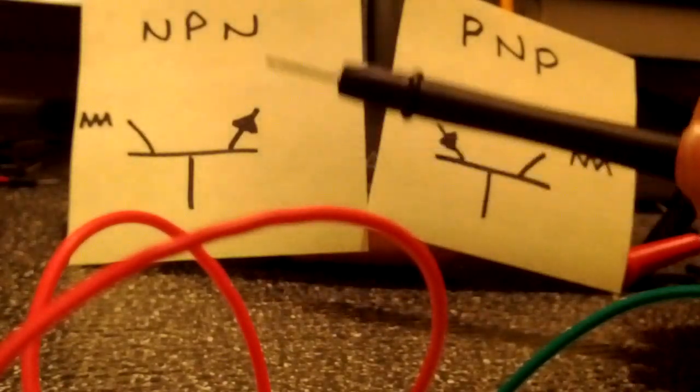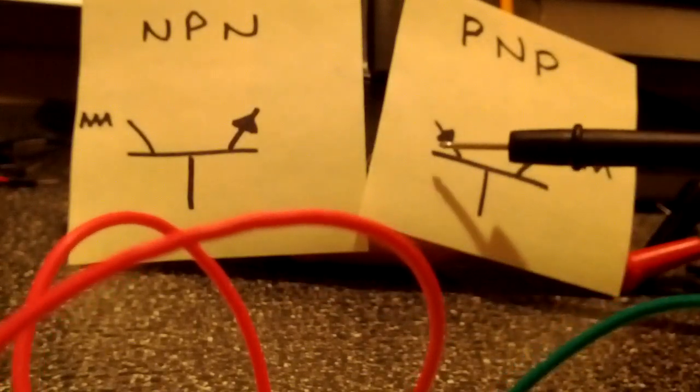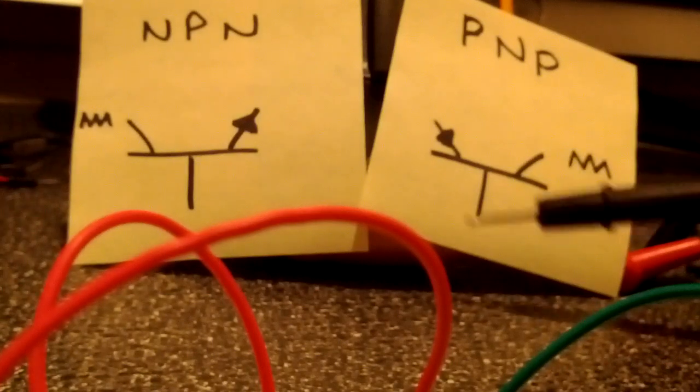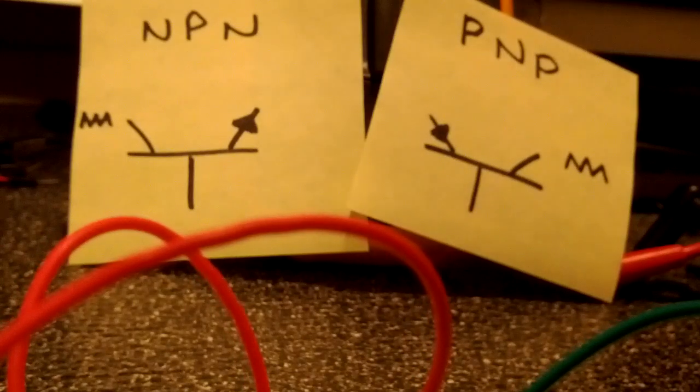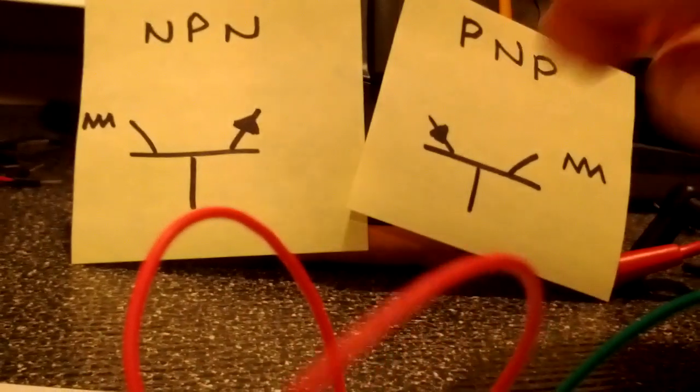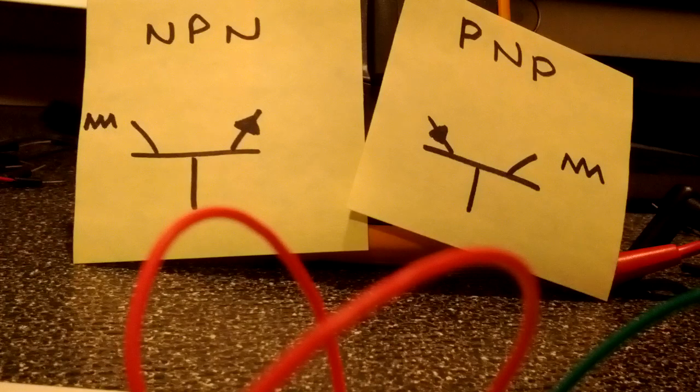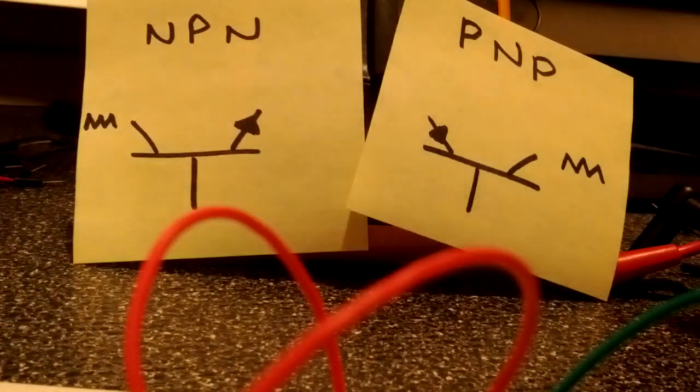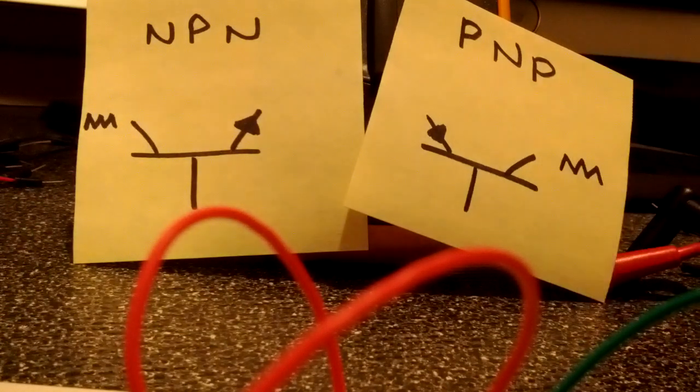The only difference is with an NPN you use a sourcing signal, which means I'm sending current in, and with a PNP I'm using a sinking signal, which means I'm sending current down. I'm using a ground to trigger it or I'm using power to trigger it. And that's essentially the only difference. They're very similar. They're identical in looks. They do the same thing. They're both just closing switches or amplifying current. And the difference is that if you're using a power source to close the switch you use an NPN, and if you're using a ground signal, zero volts, a reference voltage, you'll use a PNP.